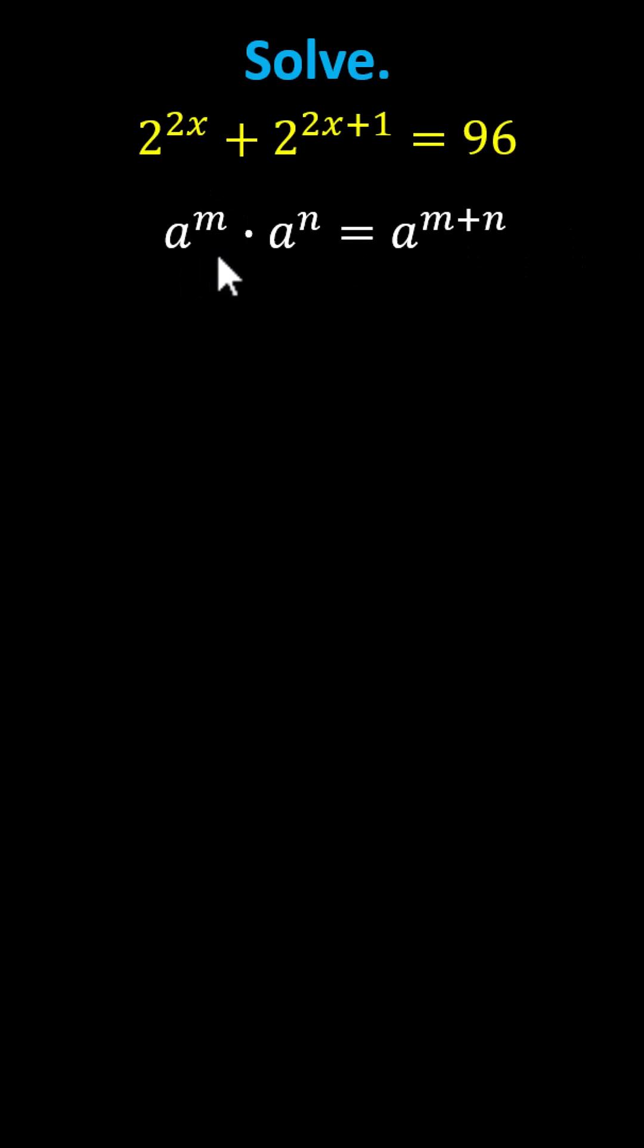Using the exponent property, a to the power of m times a to the power of n equals a to the power of the sum of m and n, we can write 2 to the power of 2x plus 1 as 2 to the power of 2x times 2 to the first, or 2 times 2 to the power of 2x.